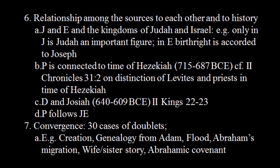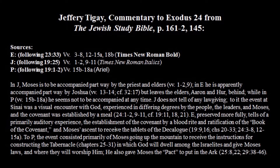Hezekiah seems to have been trying to enact a Deuteronomic revolution because during his time the northern kingdom was destroyed. Archaeology shows Jerusalem expanded enormously in the time of Hezekiah due to an influx of refugees from the north. Hezekiah was influenced by these northern reformers and tried to enact some of the early Deuteronomic school reforms, but didn't fully succeed. D is evidently connected with the story of Josiah, and J and E tend to be earlier than P. Number seven — convergence: there are 30 cases of repetitions, including the creation story, the genealogy from Adam, the flood story, Abraham's migration, the wife-sister story where Abraham says Sarah is his sister, and the Abrahamic covenant repeated several times in different sources.